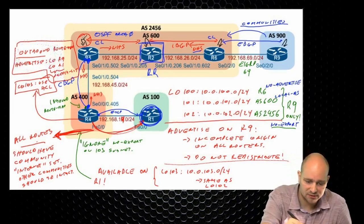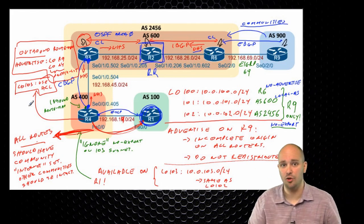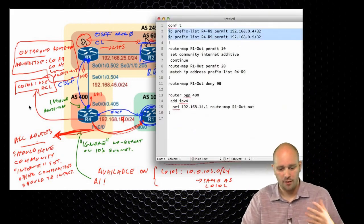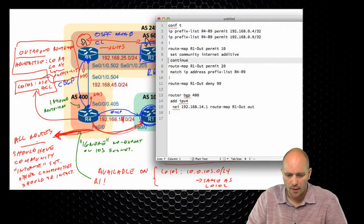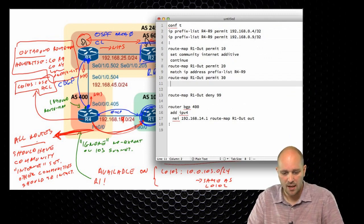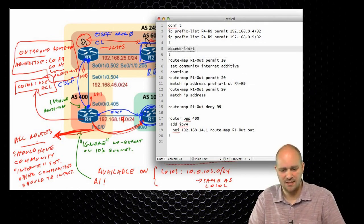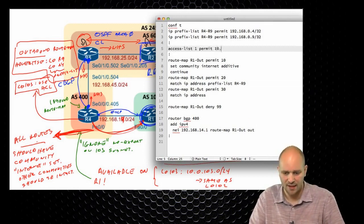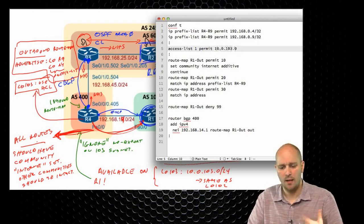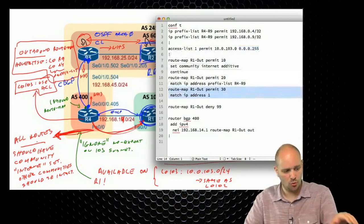This takes care of the first part of the task — advertise loopback of R9 and R4 to R1 using the prefix list. Now for loopback 103, we have to use an access list. Going back to the notepad, we need to add a route map entry — R1-out permit 30, match IP address — this needs to be an access list. So access list 1 permit 10.0.103.0 with wildcard mask 0.0.0.255 since it's slash 24. In the route map I say match IP address 1. Let me add this to the configuration.